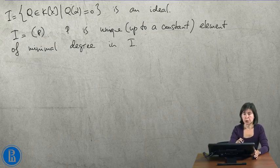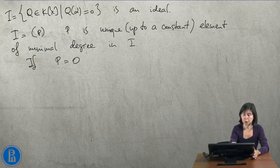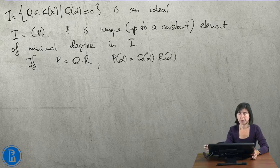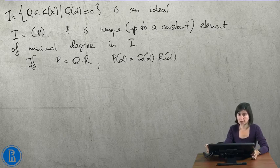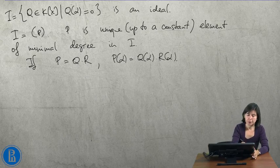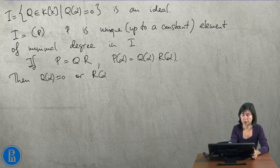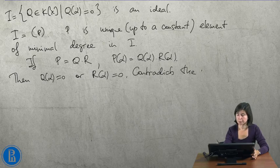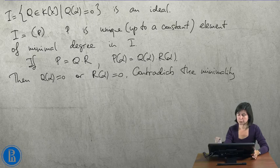Furthermore, if P was not irreducible—if P is Q times R—then P(alpha) is Q(alpha) times R(alpha). So Q(alpha) or R(alpha) must be zero, and this contradicts the minimality of the degree.